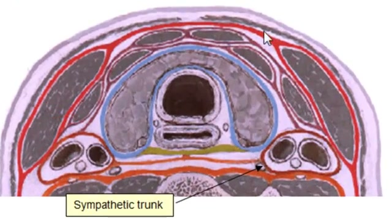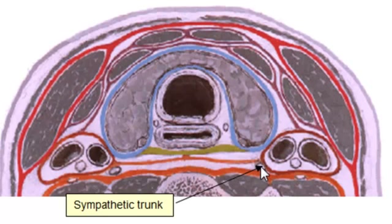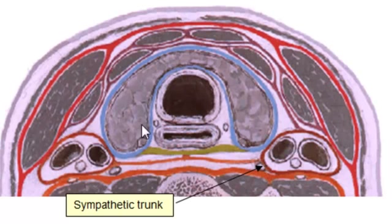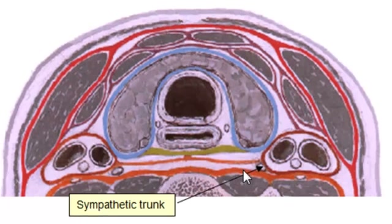In this horizontal section of the neck, you can see the location of the sympathetic trunk. It is not as close to the thyroid gland as the recurrent laryngeal nerve, but the sympathetic trunk might be affected or injured during operation, or even compressed by a tumor of the thyroid gland. It is located outside the carotid sheath, outside the pretracheal fascia, and outside the prevertebral fascia.